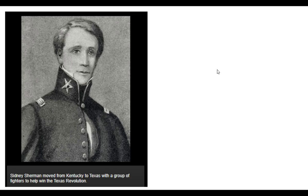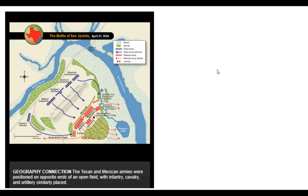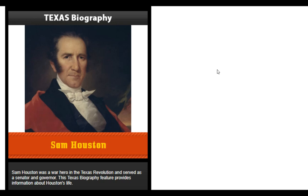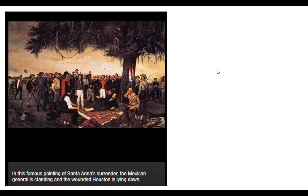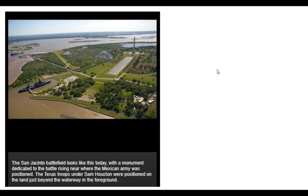Sidney Sherman moved from Kentucky to Texas with a group of fighters to help win the Texas Revolution. Here's a geography connection: at the Battle of San Jacinto, the Texan and Mexican armies were positioned on opposite ends of an open field with infantry, cavalry, and artillery similarly placed. Sam Houston was a war hero in the Texas Revolution and served as a senator and governor. This famous 1895 painting by Henry Arthur McArdle depicts the Battle of San Jacinto. The artist did extensive research to make sure the details of the painting were accurate. In another famous painting of Santa Ana's surrender, the Mexican general is standing and the wounded Houston is lying down. The San Jacinto battleground looks like this today, with a monument dedicated to the battle rising near where the Mexican army was positioned.